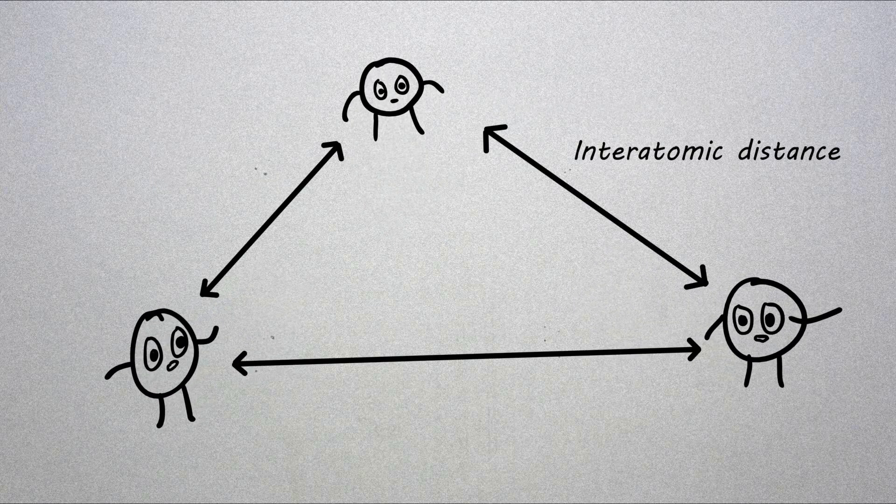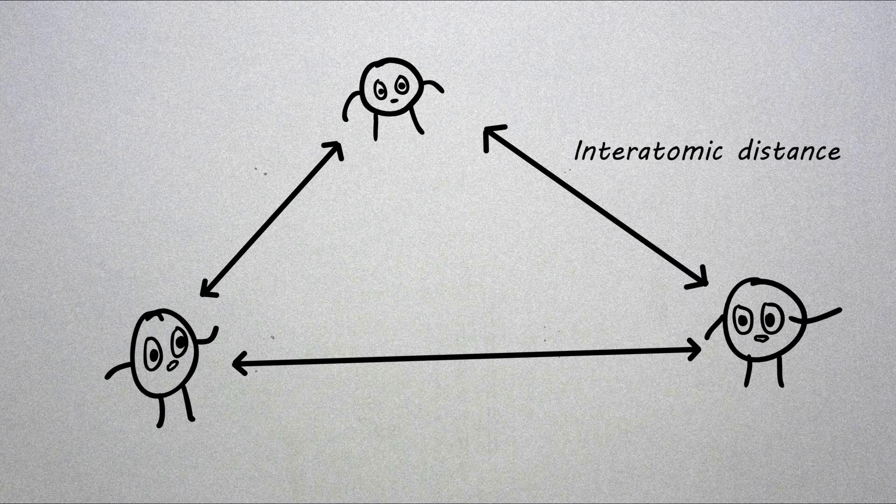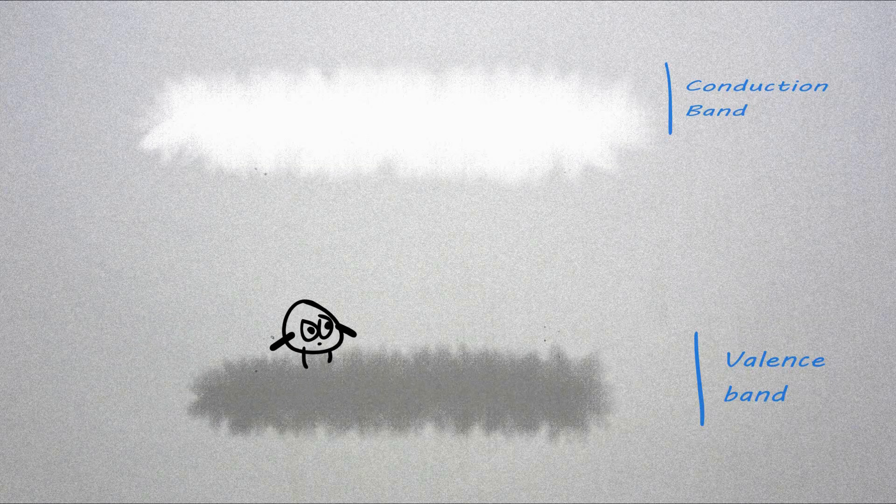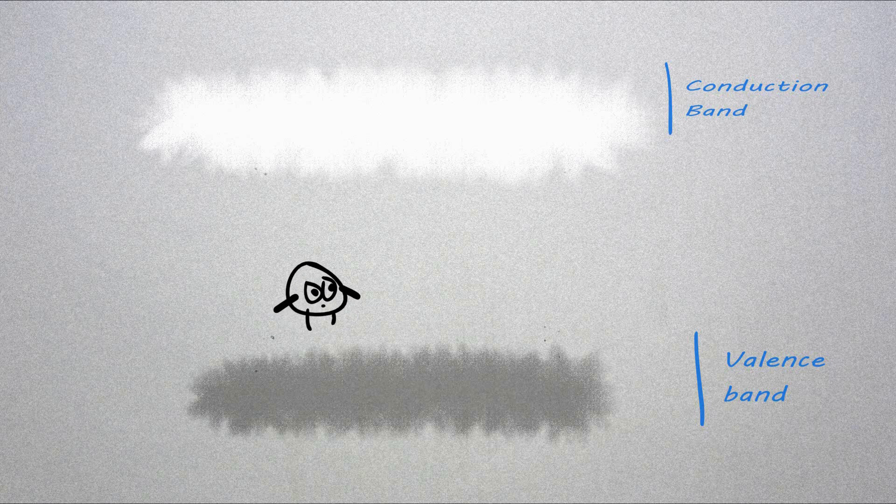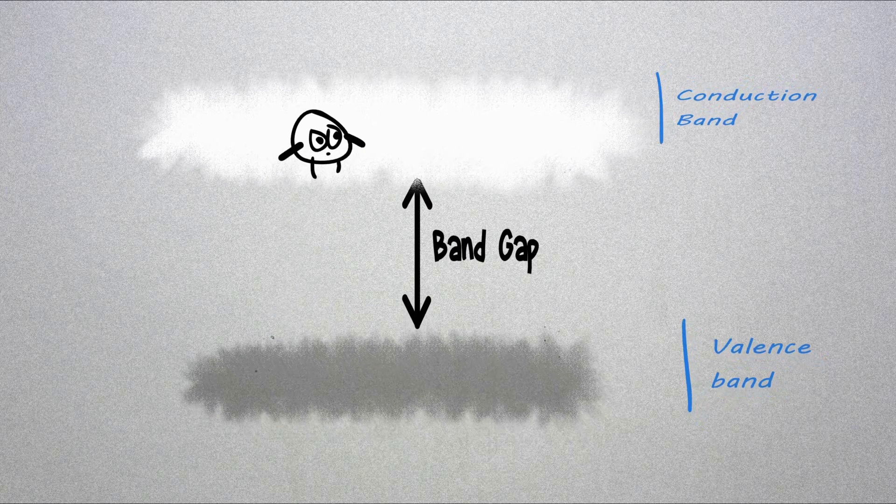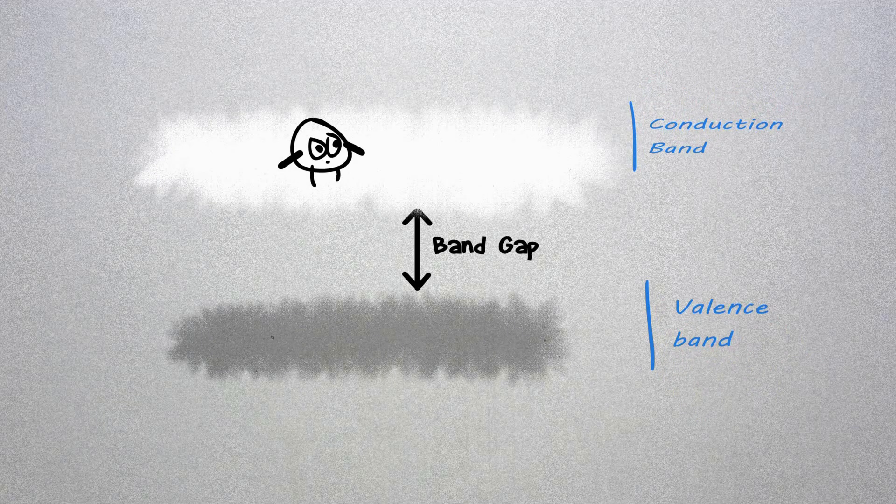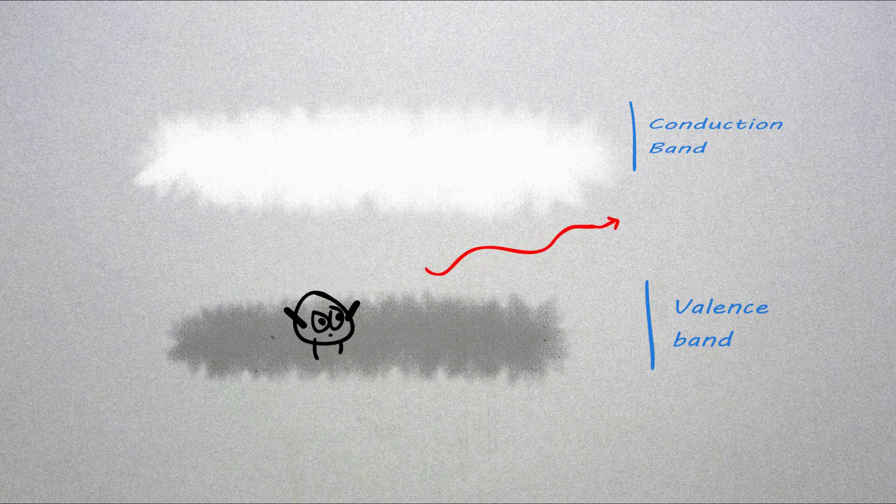The valence electrons sort of get more free and less energy is required to make them go into the conduction band. In terms of our band theory, the band gap decreases. And when the band gap decreases, it means the electrons don't have to fall as far and so that increases the wavelength of light released.